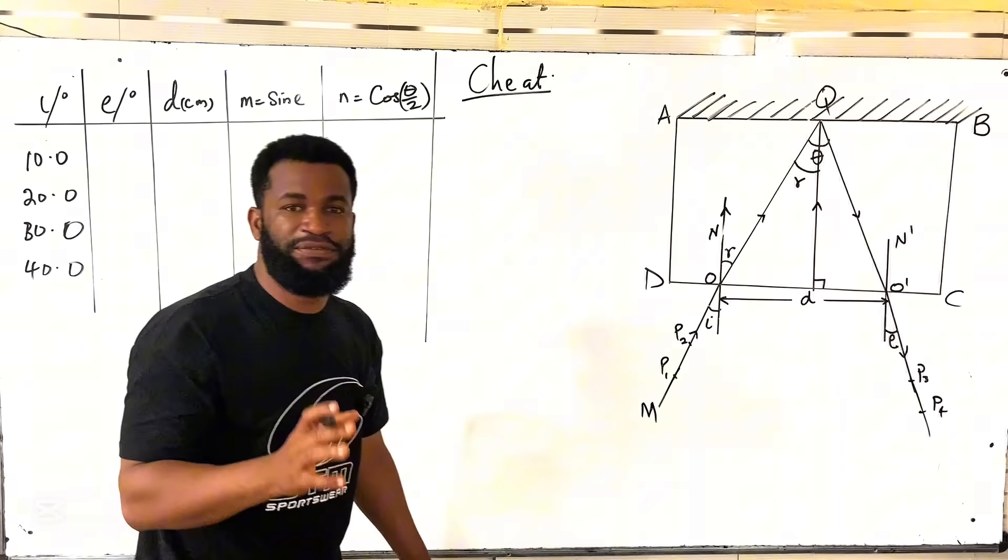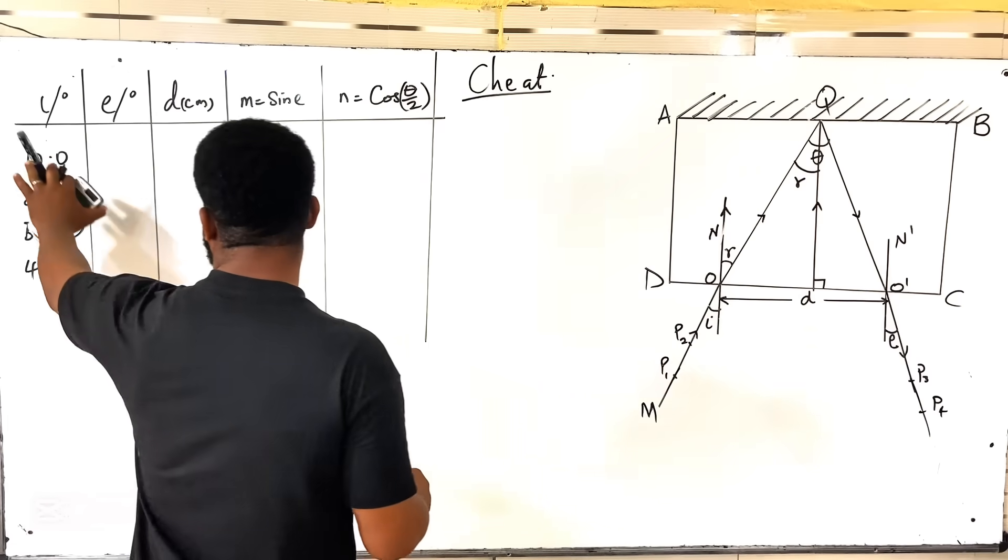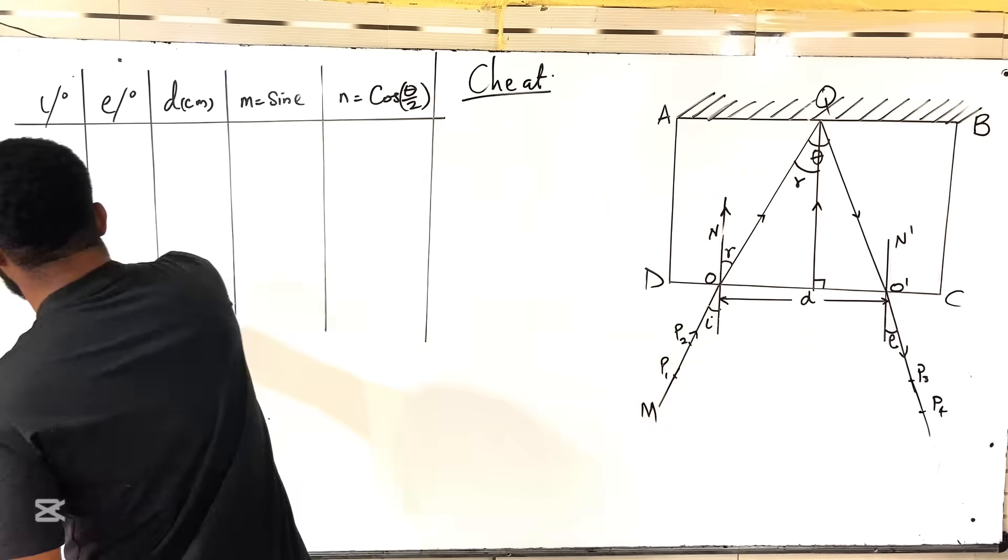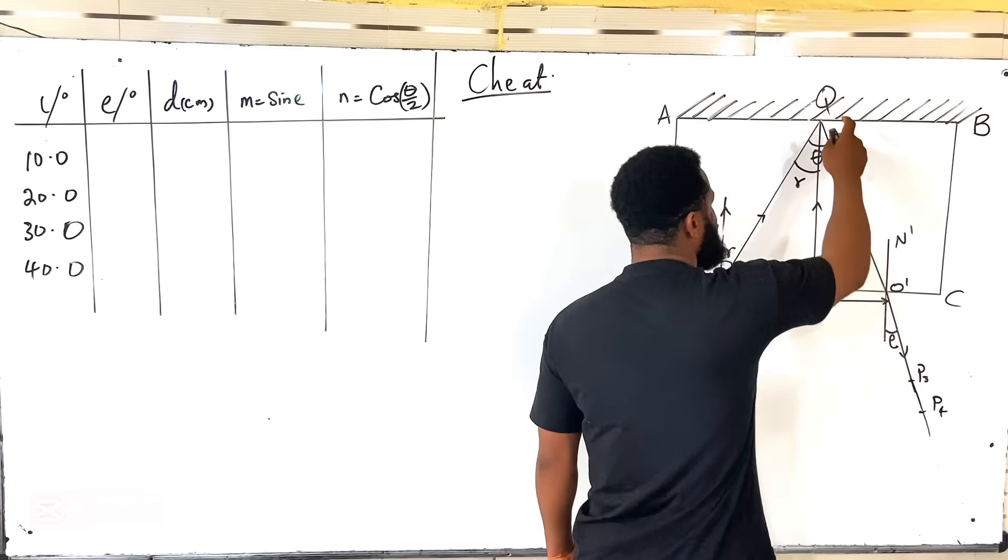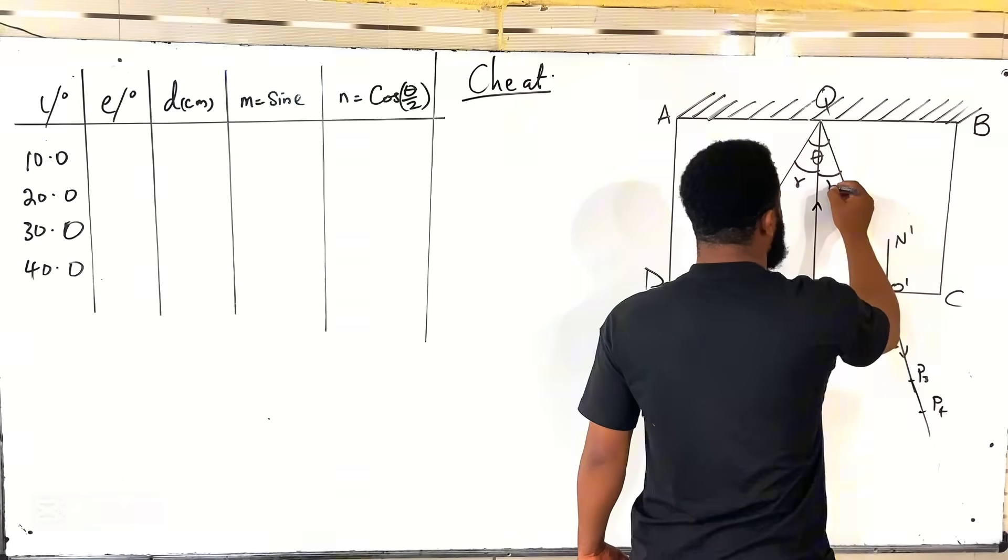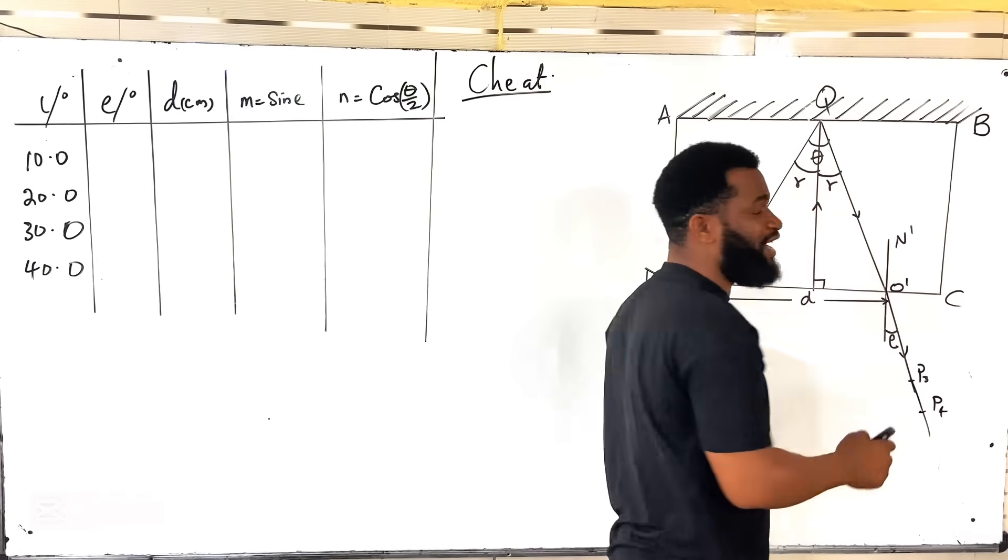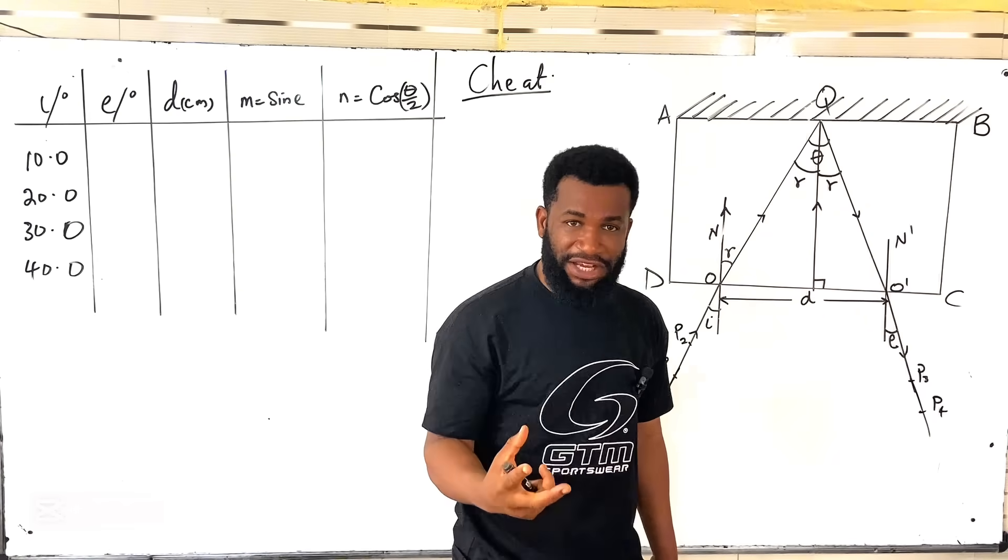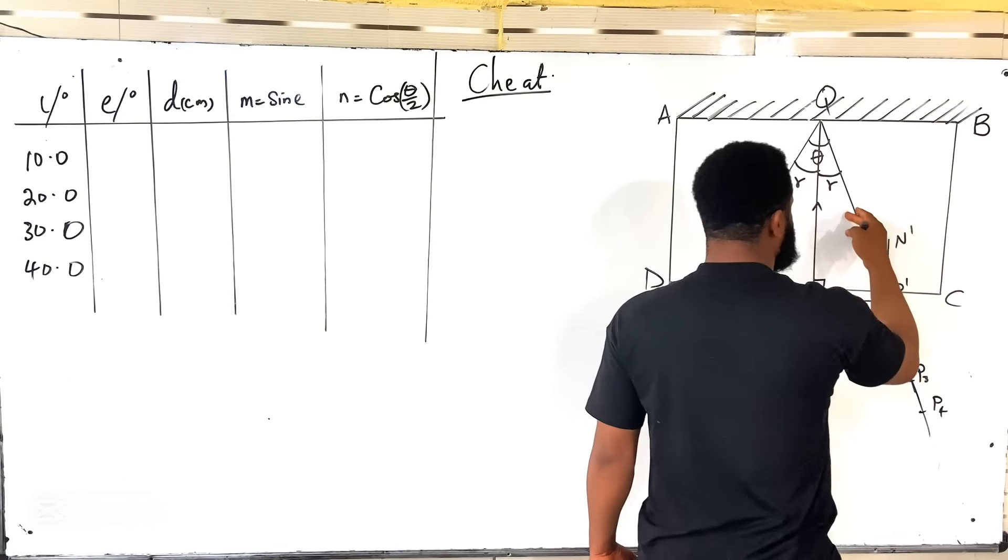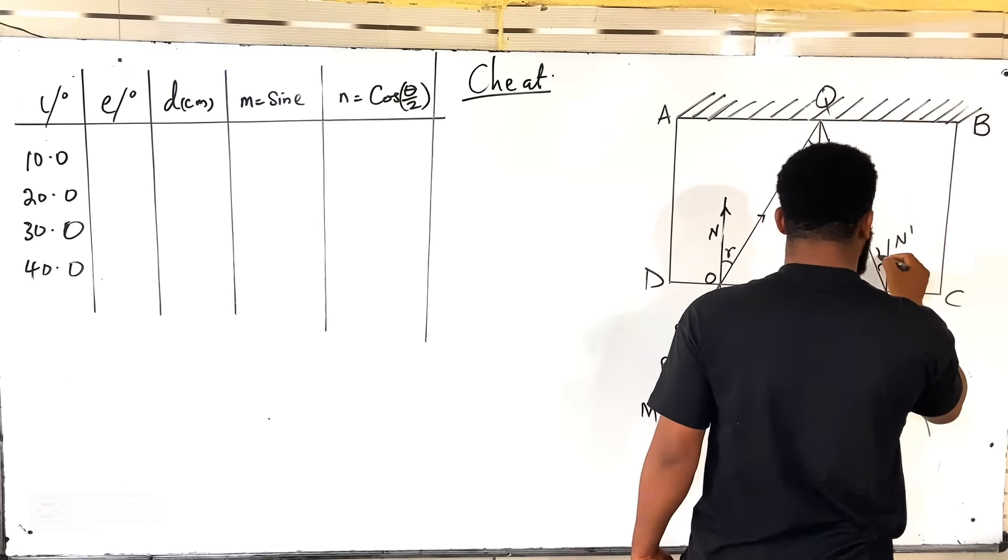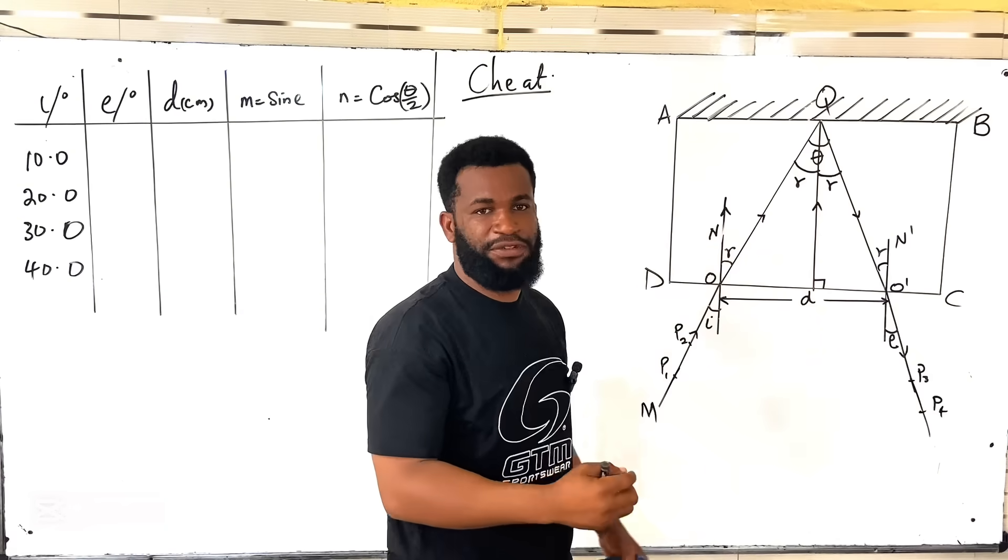Remember, the question is going to say that we have 10.0, 20.0, 30.0, and 40.0 degrees. Whether they say 10, 15, 20, 25, whatever they say, this is what you are going to have for incidence. When it enters here, remember, it refracts. This same place will be the R. This angle R must be equal to this R according to the law of reflection.